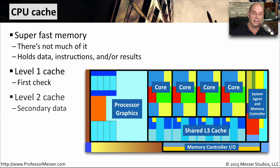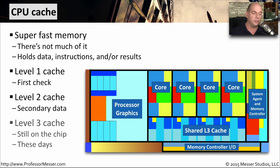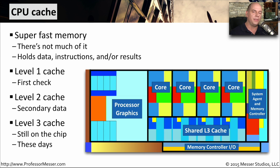These days, we'll often see a level two cache that contains secondary data. And even in the case of the CPUs we've been looking at here, there's a level three cache — still on the chip itself — shared across multiple cores. You'll have to look at the architecture of the CPU you're interested in to really understand how many different levels of caching there are and how large those caches happen to be.